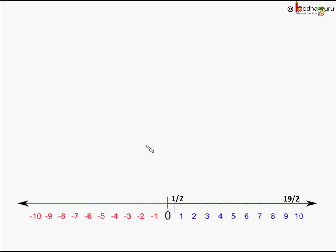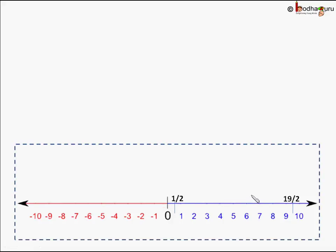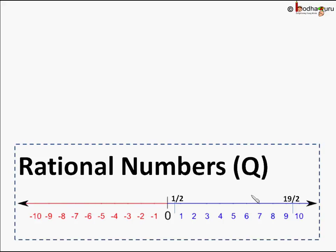We know decimal numbers and fractions are different representations of the same numbers — like 0.5 is the same as 1/2, or 9.5 is the same as 19/2. So if we take integers and the decimal numbers or fractions between them, this collection is called rational numbers, and it is denoted by Q.